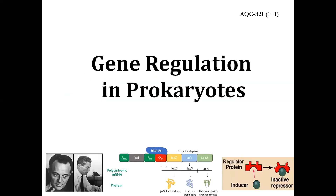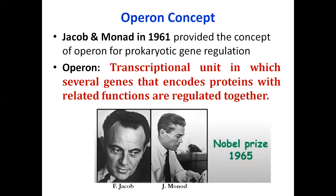When we talk about gene regulation in prokaryotes, we mean how the different genes which code for specific functions are regulated — meaning when there is a requirement, only then they will be expressed. But how does the cell or its DNA recognize the signals for whether a gene is required to be expressed or not — that is what we are going to discuss.